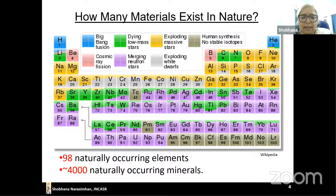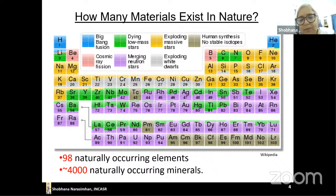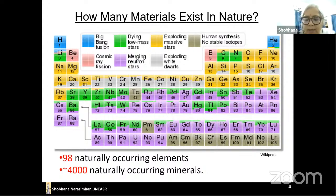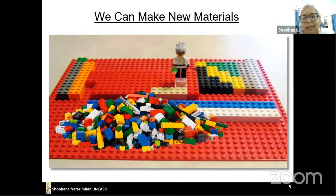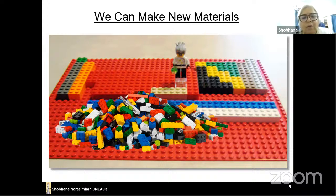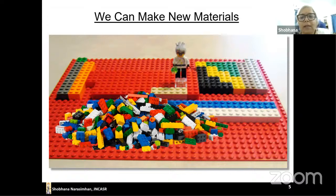How many materials exist in nature? This is the periodic table, which I'm sure you're all familiar with. There are 98 naturally occurring elements, and of the minerals — the compounds we find naturally in nature — there are about 4,000 of them. However, we are not restricted to just these 4,000. We can think of the elements of the periodic table as building blocks, like LEGO blocks, to make new materials.